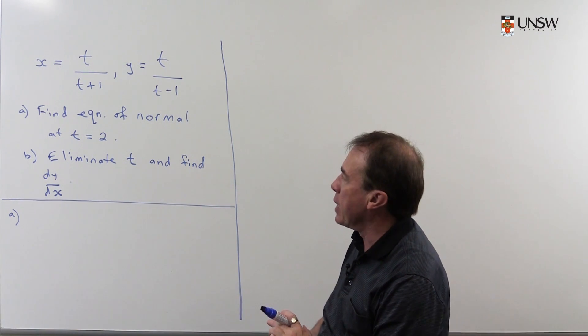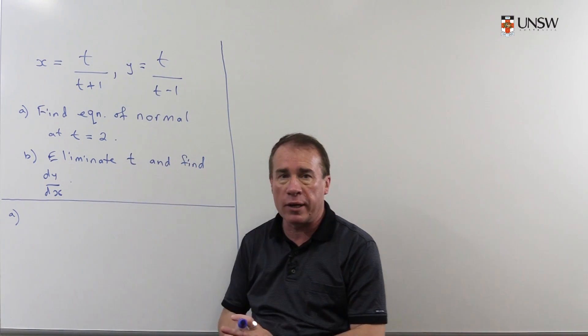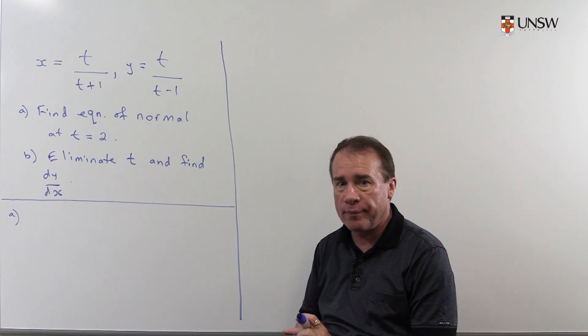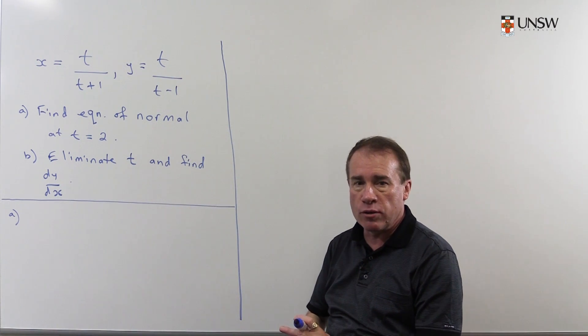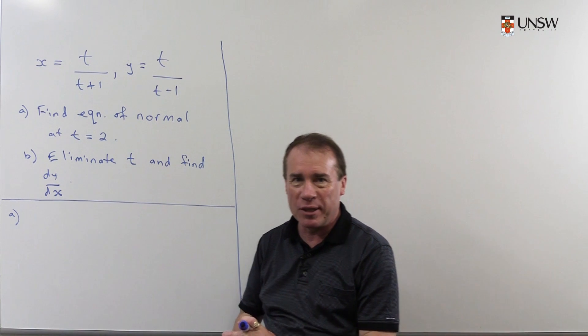And then I'm going to eliminate t from these equations and find dy/dx without any t's in it, just in terms of x's and y's. And so there's sort of two methods in which we're going to find the derivative, because we'll need to get the derivative in order to get the gradient of the normal.